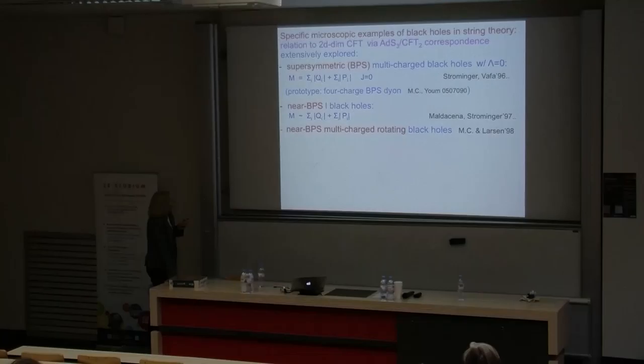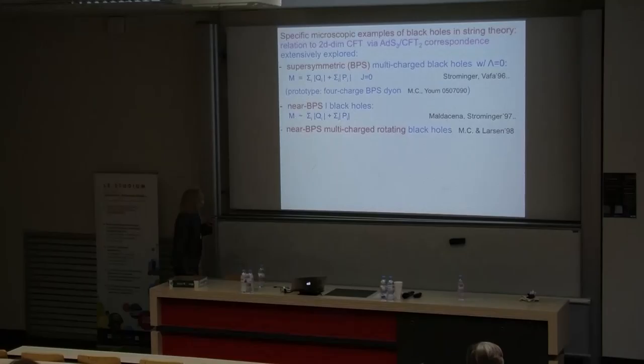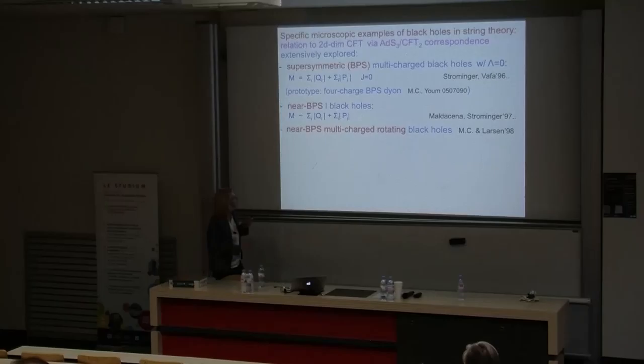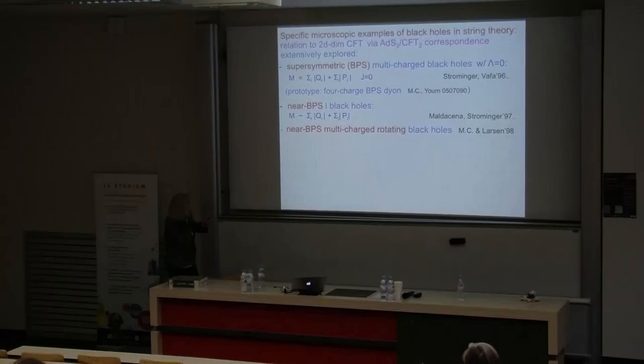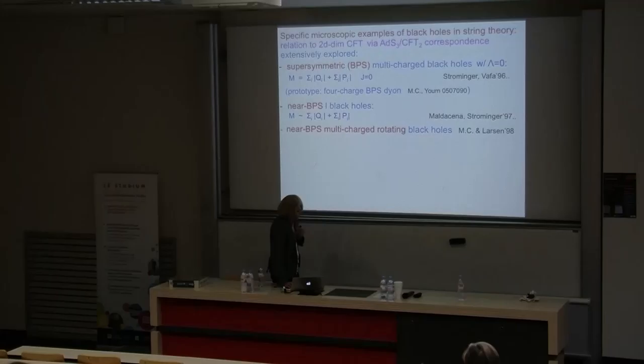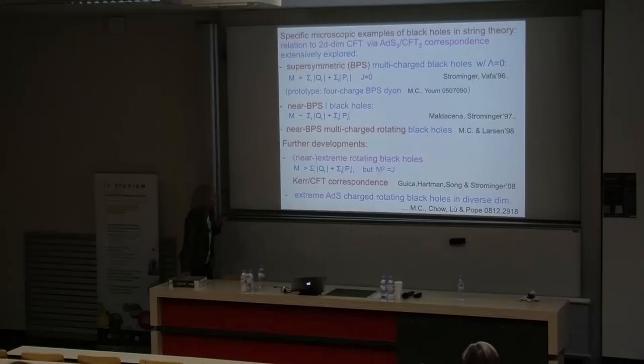One was able to generalize this understanding to near-BPS black holes — those with mass slightly above the extremal value. At least in the context of the ADS-3 / CFT-2 correspondence, all these typical black holes — multi-charged, rotating, with zero cosmological constant — in the near-extremal case fit the description in terms of this correspondence. There was also some further progress, less relevant to the BPS study, on trying to understand microscopically another type of extremal black hole: the strictly rotating ones.